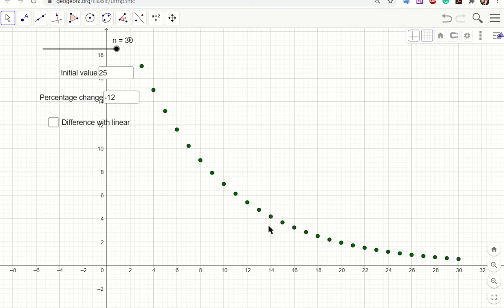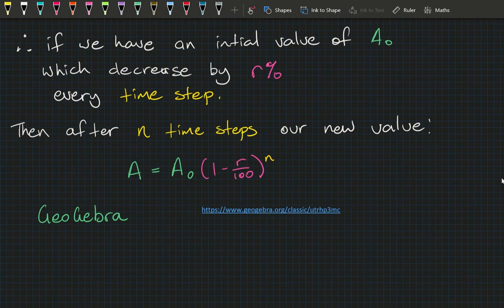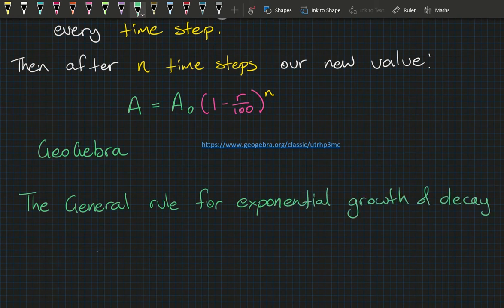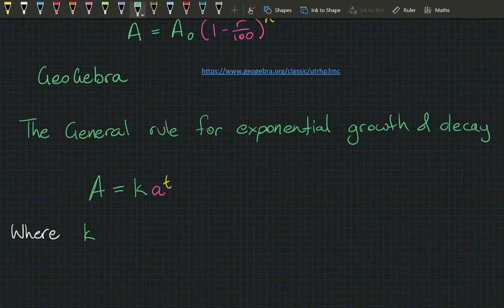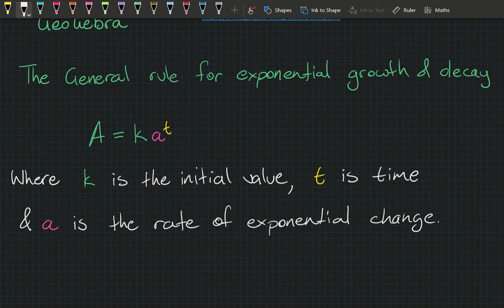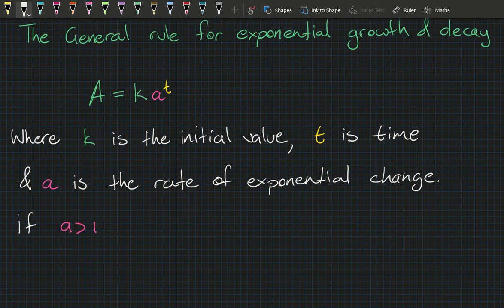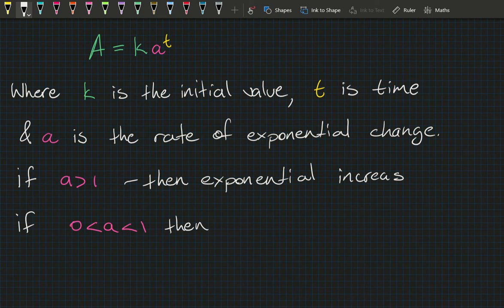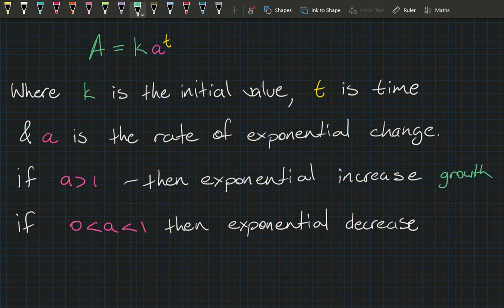Keeping in mind the exponential graphs and rational indices from earlier in the unit, the general rule for exponential growth and decay is: Amount A = k × aᵗ, where k is the initial value, t is time, and a is the rate of exponential change. If a > 1, we have exponential increase (growth); if 0 < a < 1, we have exponential decrease (decay).